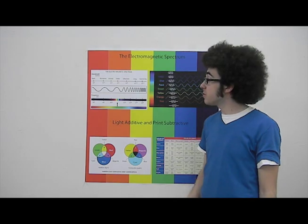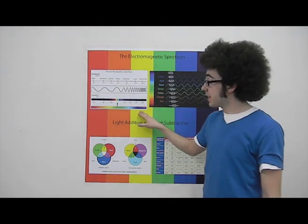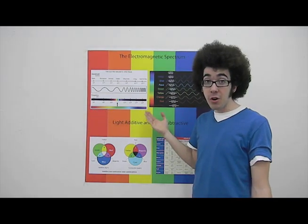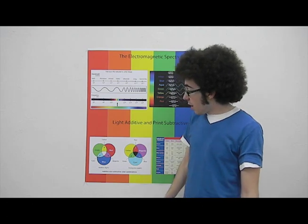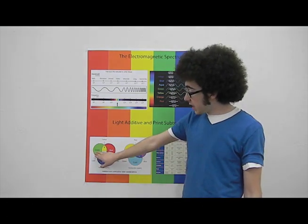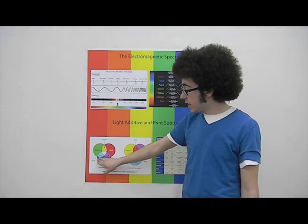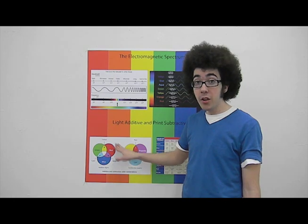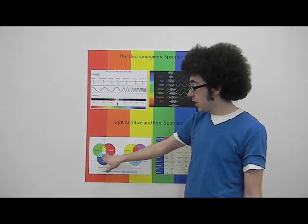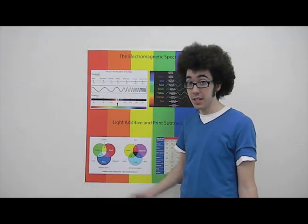Now let's talk about how we can use the colors of the electromagnetic spectrum to our advantage. With light, you can use green, red, and blue, which are the primary additive colors of light, to create yellow, cyan, and magenta. And when all of those colors are mixed together, you get white light, which is what the sun gives us.